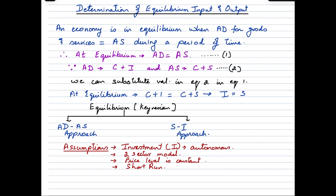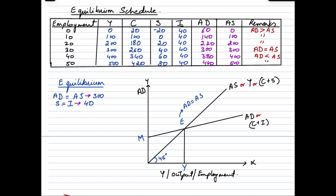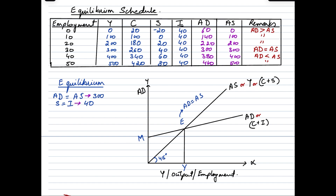Let's look at the AD-AS approach first. The equilibrium schedule has several columns: employment, income, consumption, savings, investment, aggregate demand (C + I), and aggregate supply (C + S). Employment increases from 0 to 50 millions; income goes from 0 to 500; consumption shows an upward trend from 20 to 420; savings begins negative, becomes 0, then rises; investment is constant at 40. Aggregate demand — for example, 20 plus 40 gives 60 — is derived across all rows in this manner.